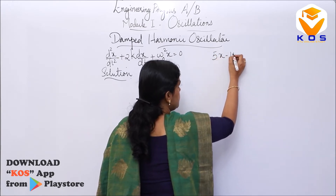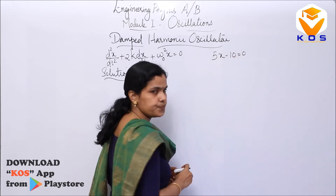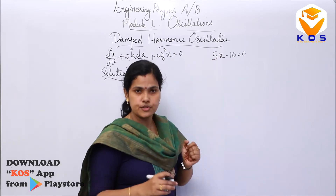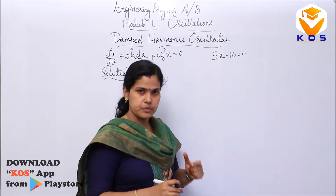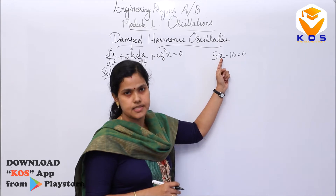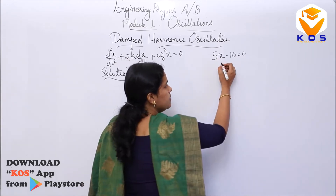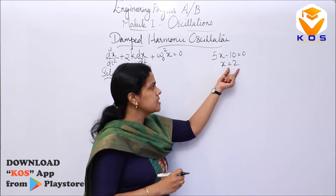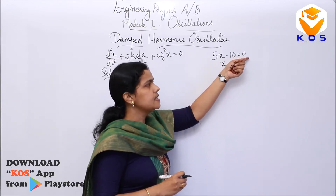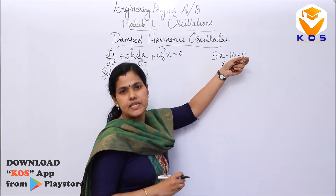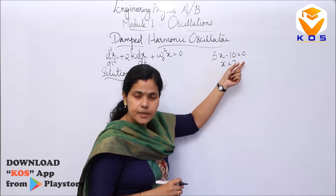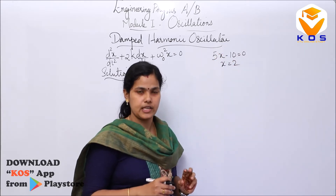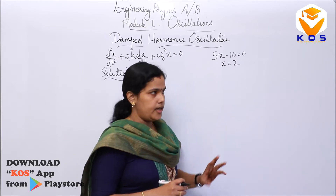Say, 5x minus 10 equals 0. What is the solution to this equation? That means, what is the value of x? When you put x equal to 2 here, this equation will be satisfied. So x equal to 2 is the solution to this algebraic equation.